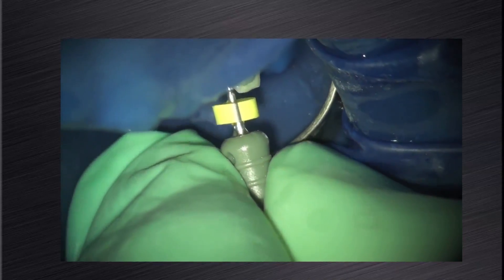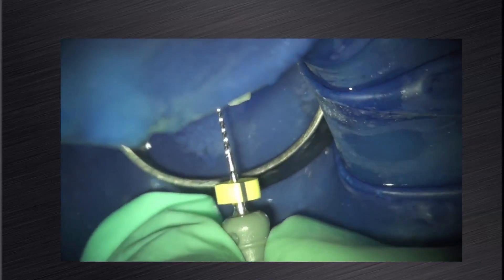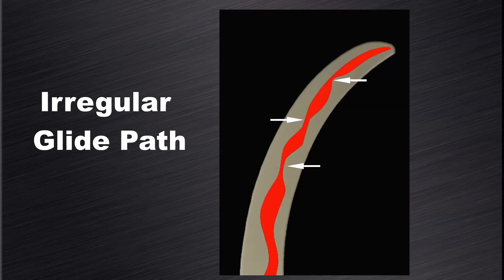Let me show you this example. On this video we have a size 08 K file that can travel down the root canal to patency. However, when we pull the file back out of the canal and try to push it back to working length, it hangs up somewhere on the canal wall. This means that there is a glide path but it is not reproducible. This diagram depicts these types of canals where there is a glide path but it is not reproducible — I like to refer to these glide paths as being irregular in shape.